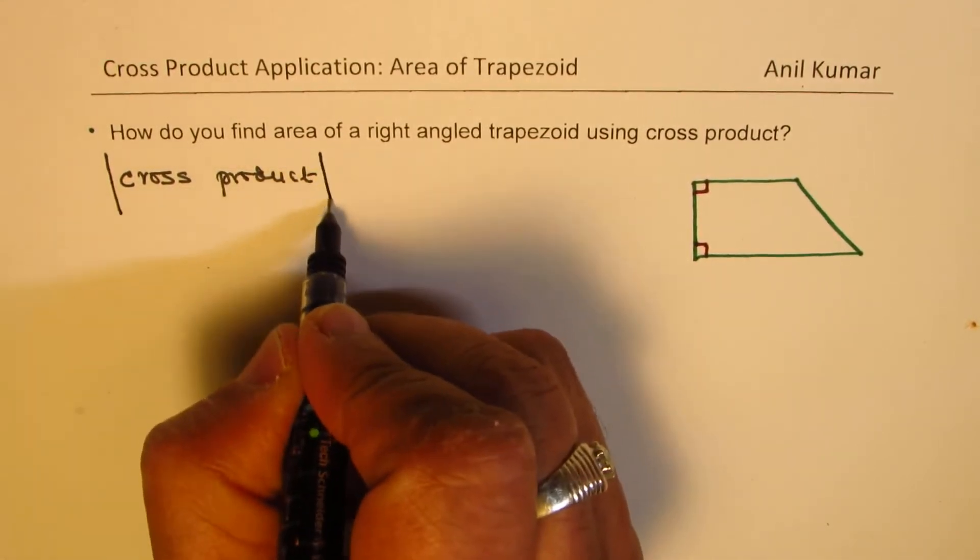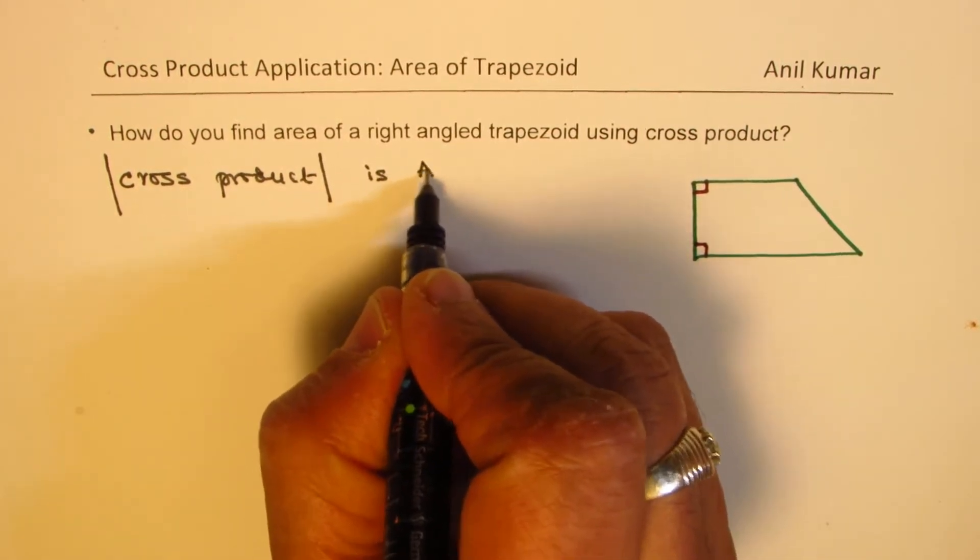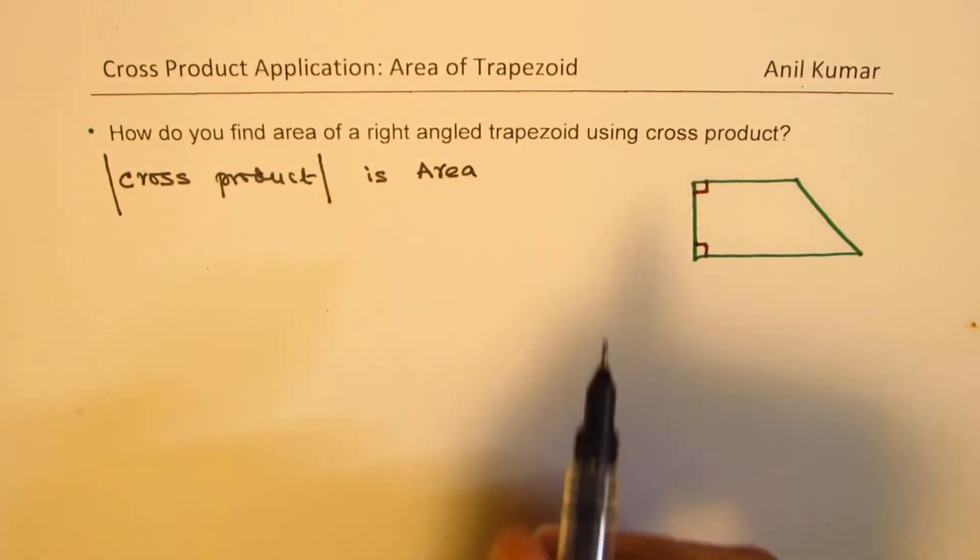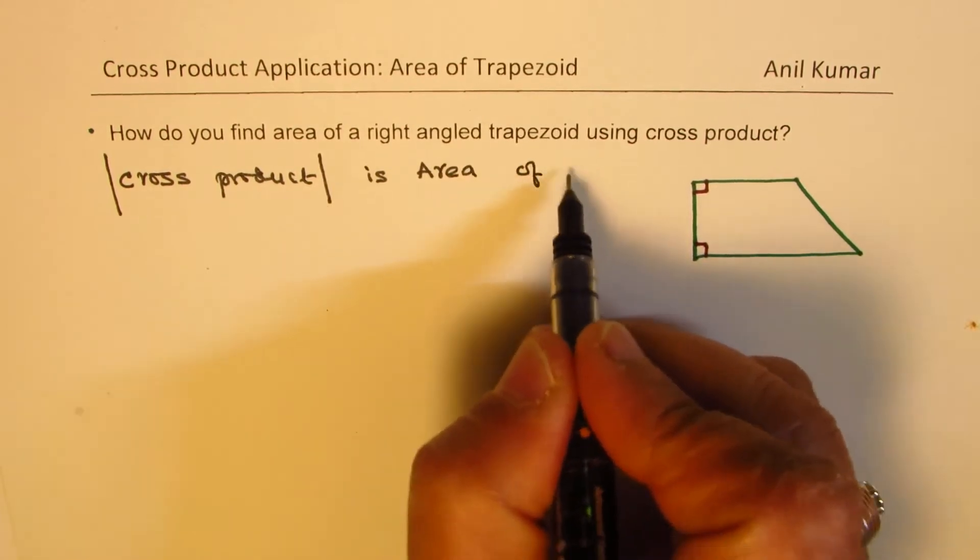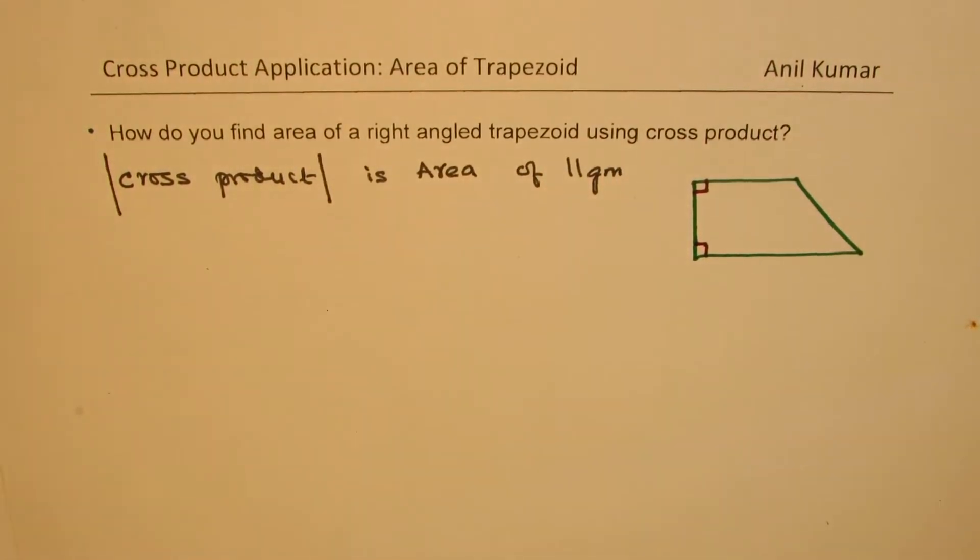Let me write it like this. Magnitude of cross product is area of parallelogram in general. Cross product, or you can say a rectangle, but in general, a parallelogram.